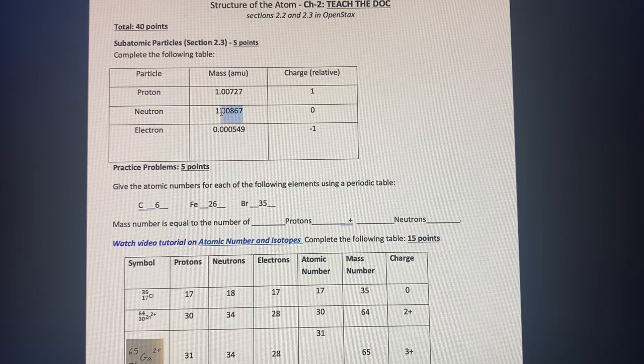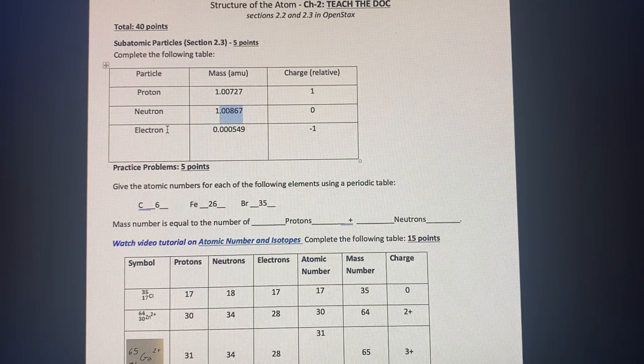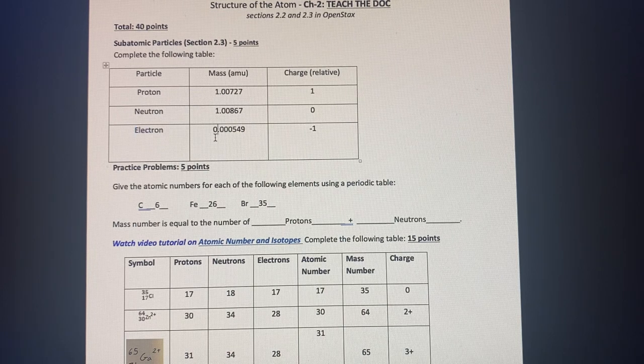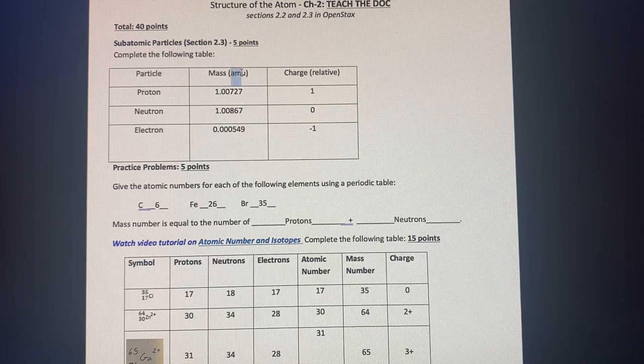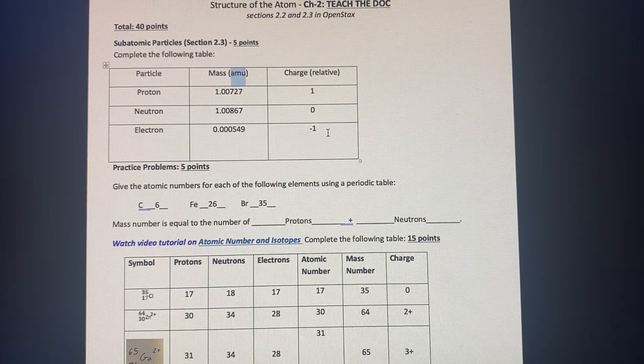We are able to find the mass of it. The third is an electron, which has a very small atomic mass, or very small mass given in atomic mass units, and has a charge of negative one.